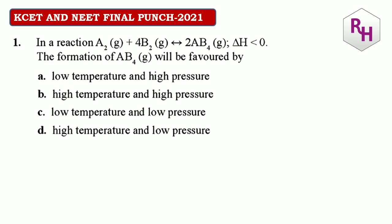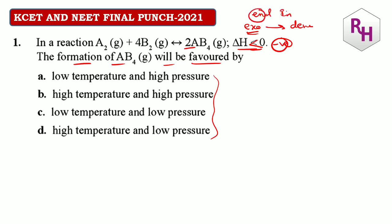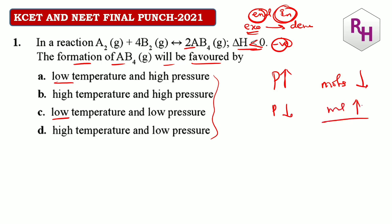First question: the reaction A2 + 4B → 2AB4, ΔH less than 0. Formation of AB4 will be favored by — let's check the options. ΔH less than 0 means exothermic. For exothermic reactions, decrease in temperature favors the forward reaction. So low temperature is favorable. For pressure: AB4 formation has fewer moles on the product side — reactant side has 4+1=5 moles, product side has 2 moles — so high pressure favors it. The answer for this question should be A.